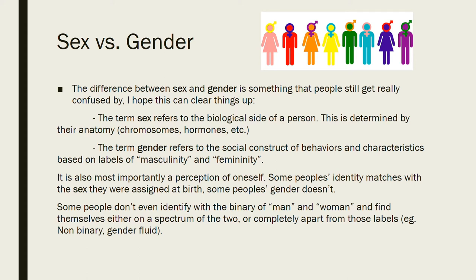Some people's identity matches with the sex they were assigned at birth, and some people's gender doesn't. Some people don't even identify with the labels man or woman, and find themselves either somewhere in between or completely apart from those labels. That would be called being non-binary, because we have this binary system of male and female, and non-binary people don't feel part of that.